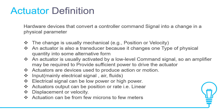Actuators are devices used to produce action or motion. Input is mainly electrical signal, air, or fluids. The electrical signal can be low power or high power. An actuator's output can be position or rate — for example, linear displacement or velocity. Actuation can range from a few microns to a few meters.